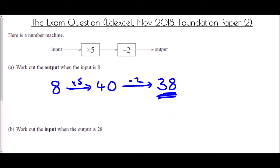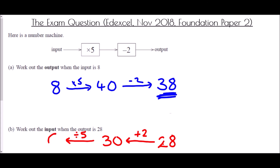In the second part, we're told the output is 28 and need to find the input. We work backwards: instead of subtracting two we add two, so 28 plus two is 30. Then instead of multiplying by five we divide by five: 30 divided by five is six. So the input is six.